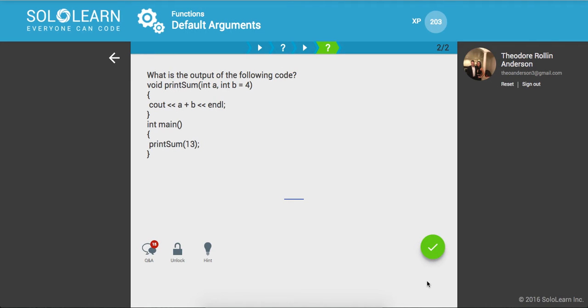So what is the output of the following code? We have a function void print sum. It's not going to return anything, but it is going to output something to the console output stream. So it looks like here we're saying 13. So 13 is going to correspond to A, but we don't have a value for B. So we're just going to say 13 plus 4 and we should get 17 as the response. Awesome.